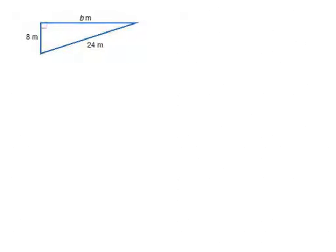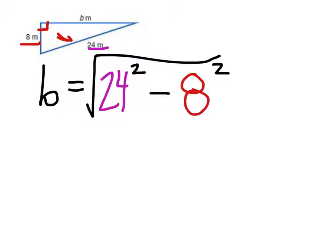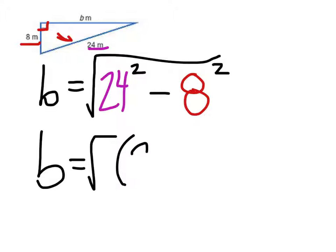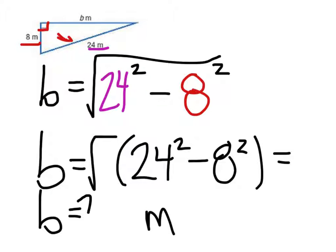In this example, are we finding a leg or the hypotenuse? You need to find the right angle, which is pointing to the hypotenuse. So since we're finding a leg, we subtract. We take the square root of the hypotenuse squared minus the known leg squared: the square root of 24 squared minus 8 squared. You can put that right into your calculator. Rounding to the nearest hundredth, that gives us 22.63 meters.